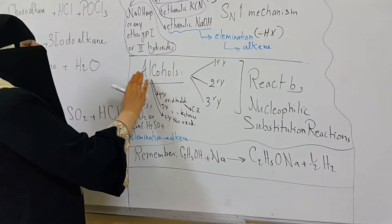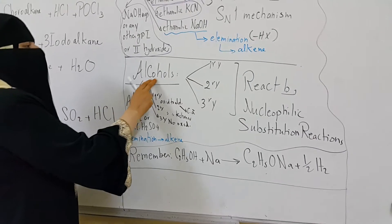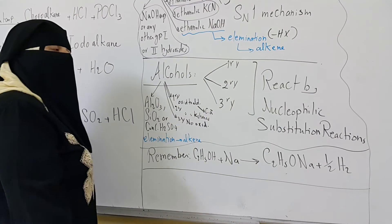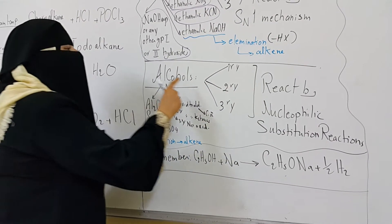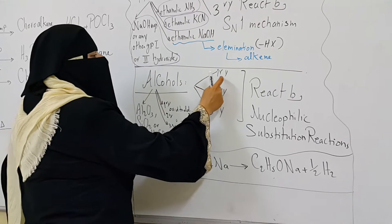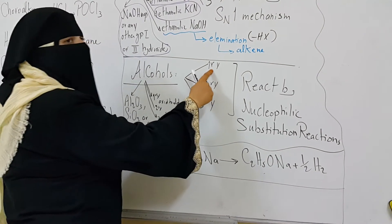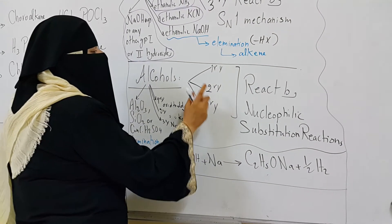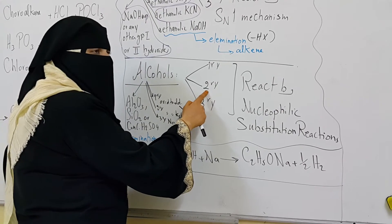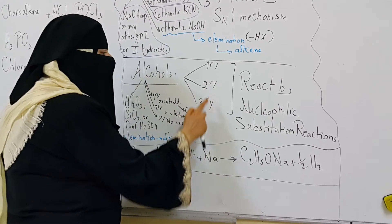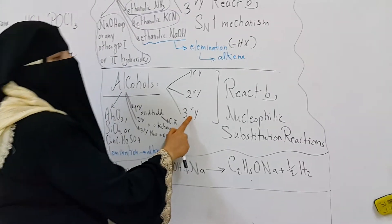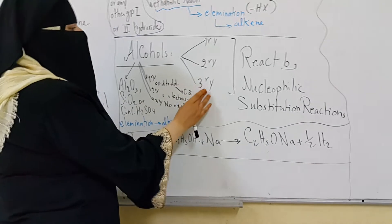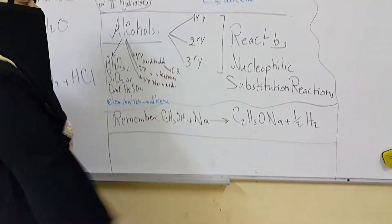Alcohols are classified according to the position of the hydroxyl group. If the hydroxyl group is attached to a carbon carrying two hydrogens, it is a primary alcohol. If it is attached to a carbon carrying one hydrogen, it is secondary. If attached to a carbon carrying no hydrogen, it is a tertiary alcohol.